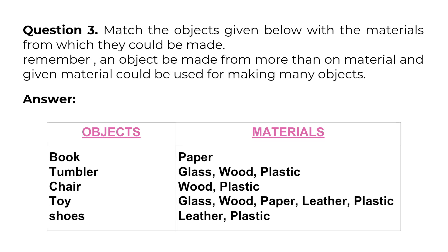Question 3: Match the objects given below with the materials from which they could be made. Remember, an object can be made from more than one material, and a given material could be used for making many objects. Answer — Objects and materials: Book (paper), Tumbler (glass), Chair (wood, plastic), Toy (plastic, wood), Shoes (leather, plastic).